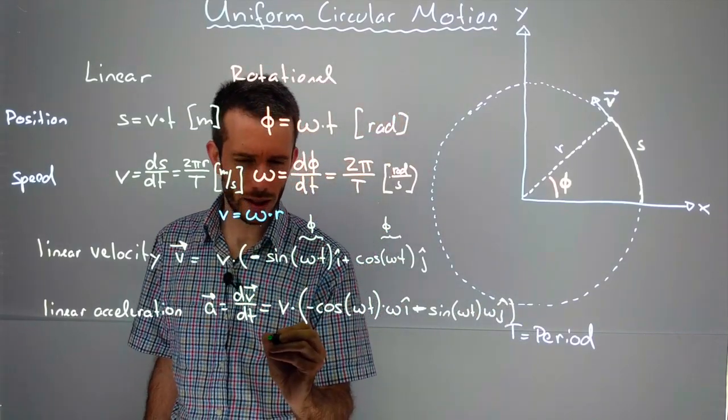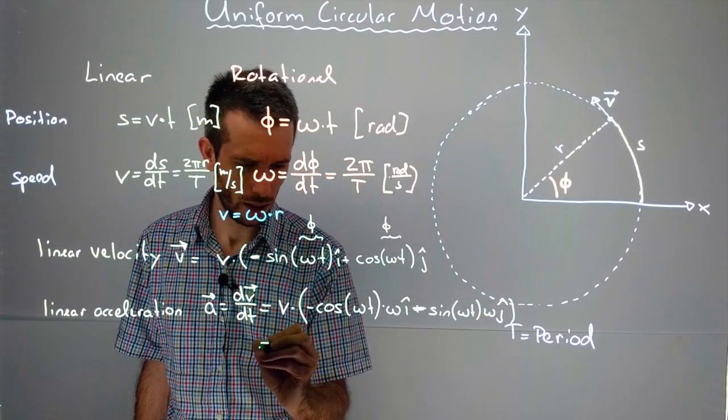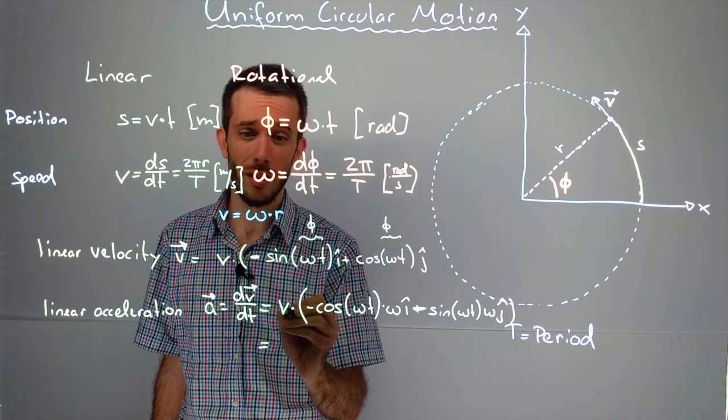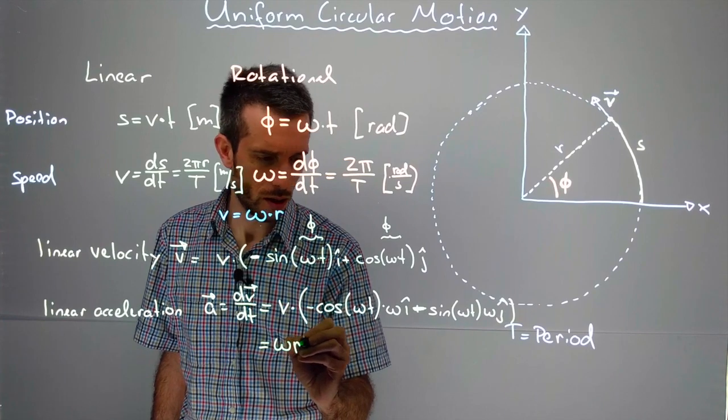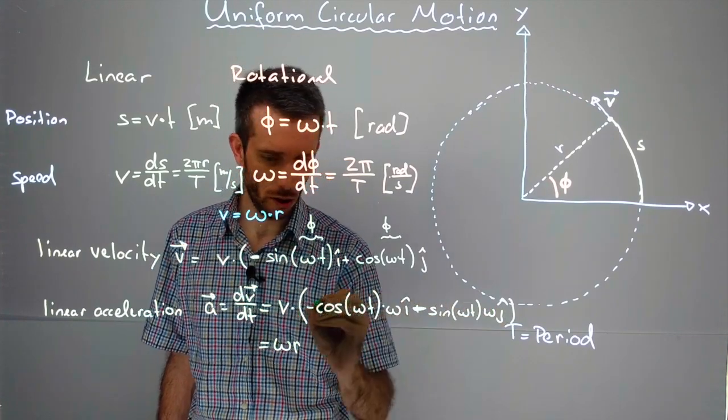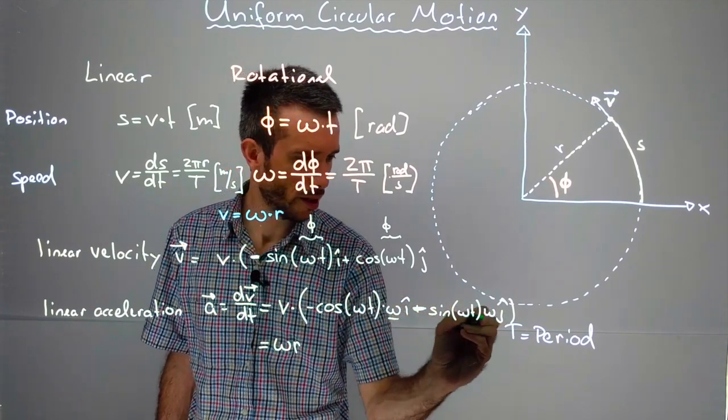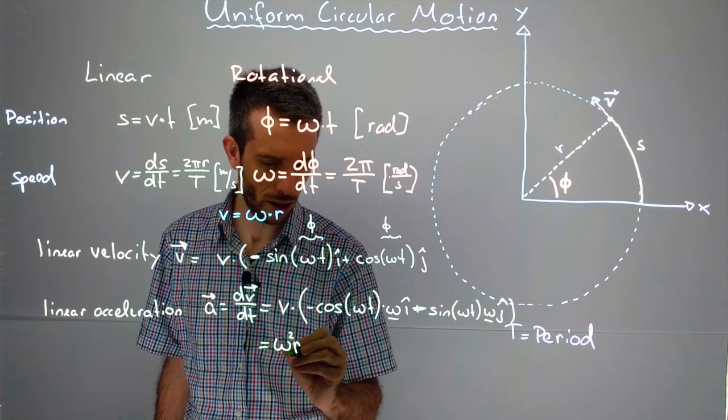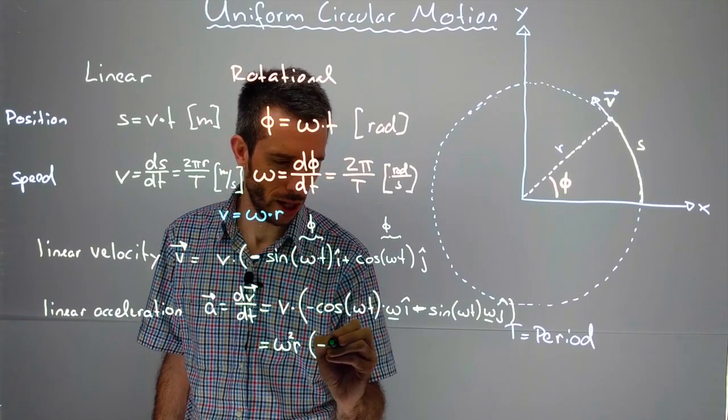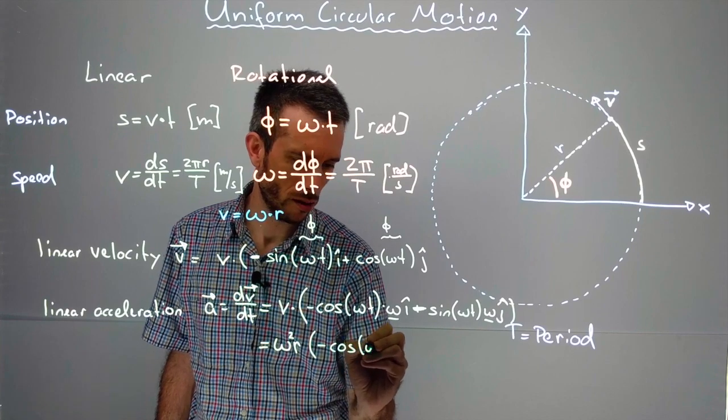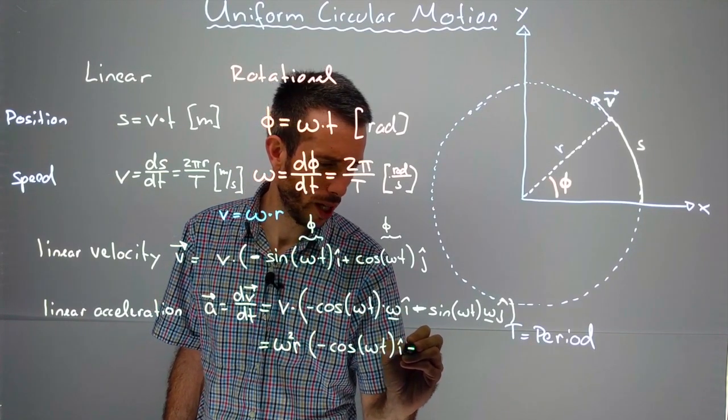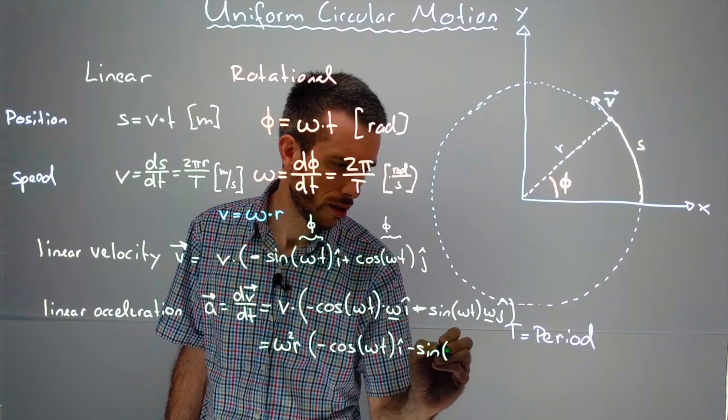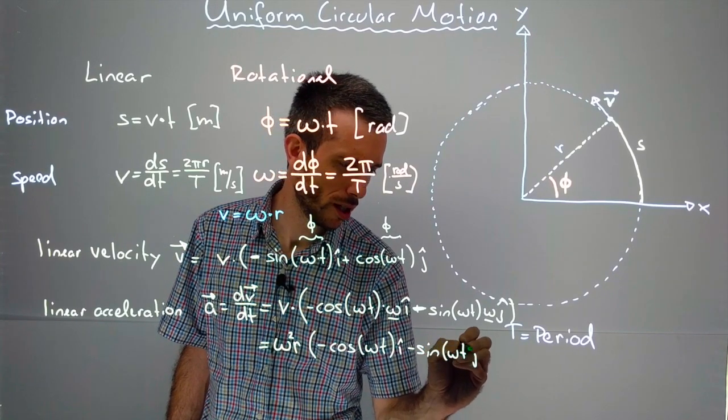Now, let's rewrite this a bit nicer. I could say this is my v, which is ωr, times the ω that I have here and here. So ω² r times minus cosine(ωt) i-hat, minus sine(ωt) j-hat.